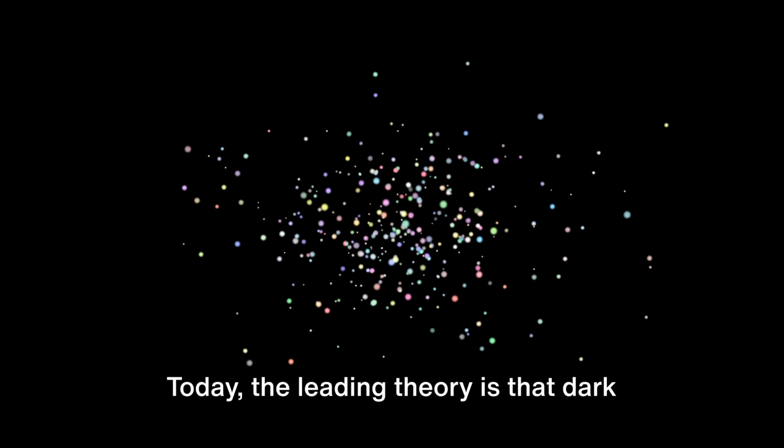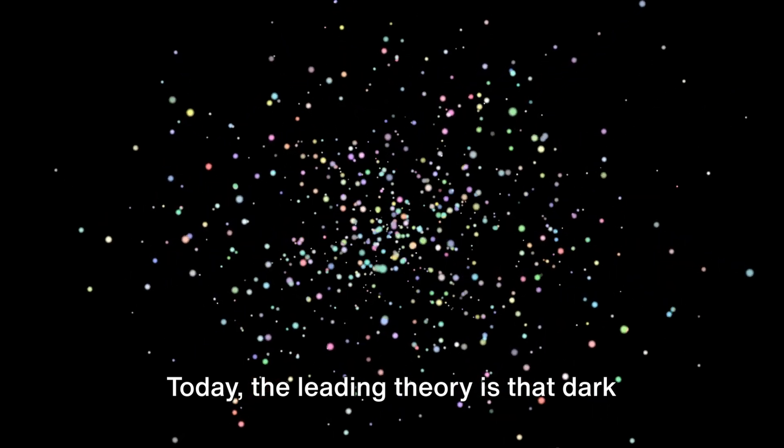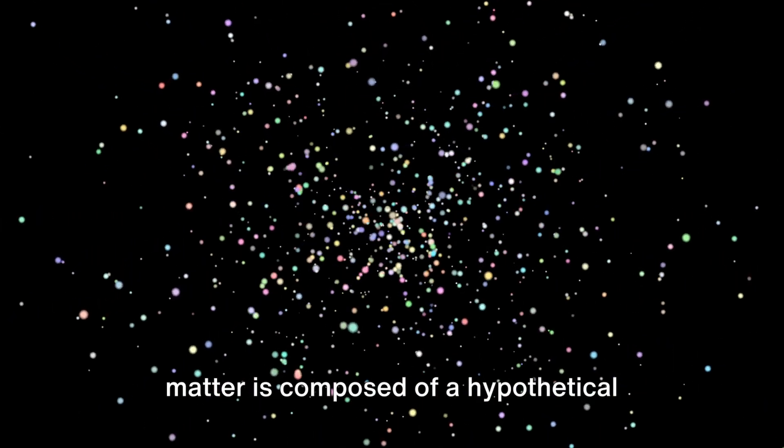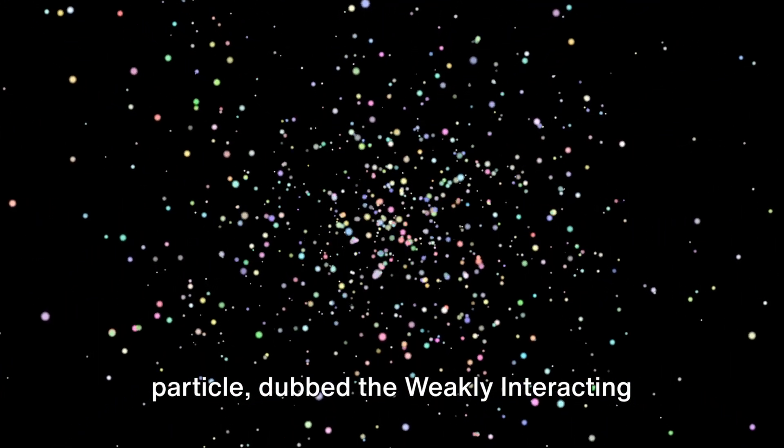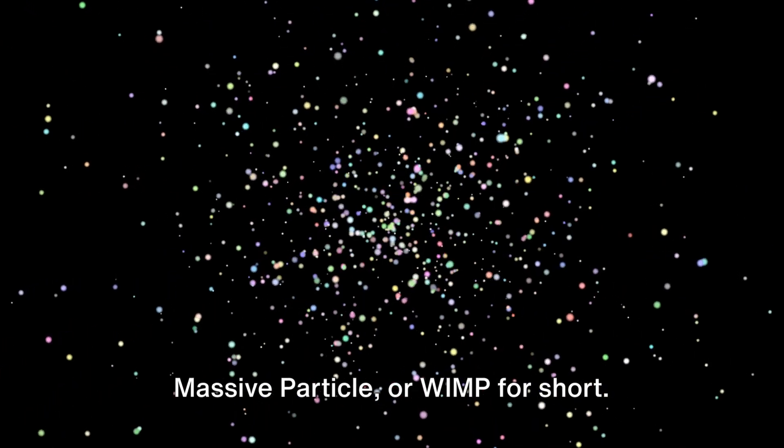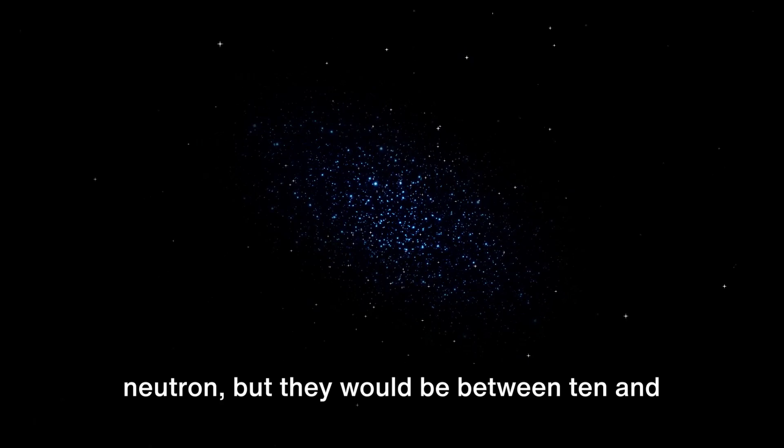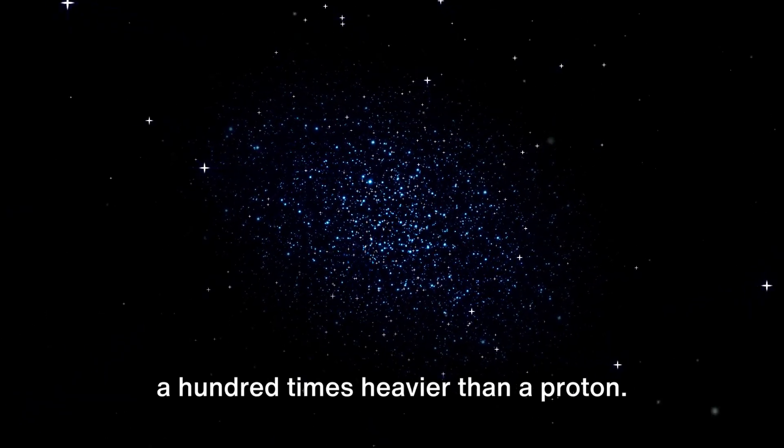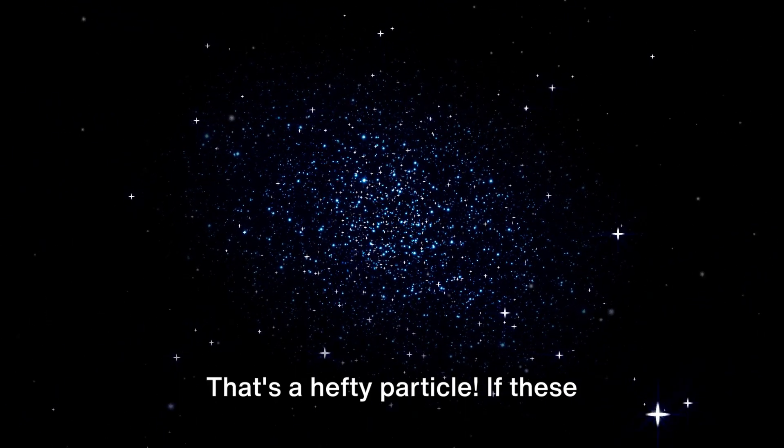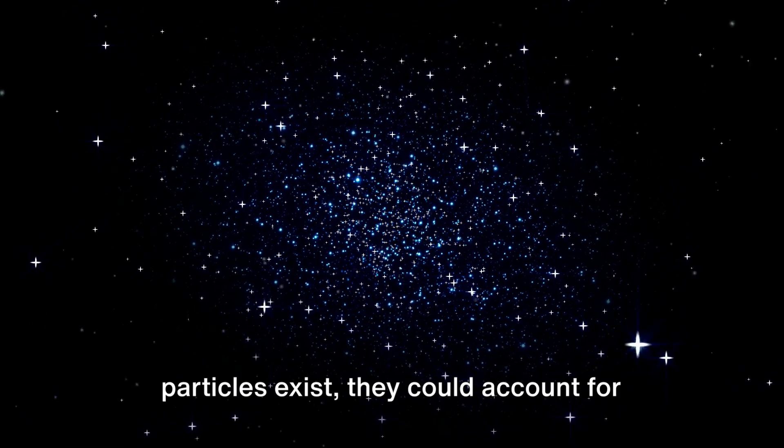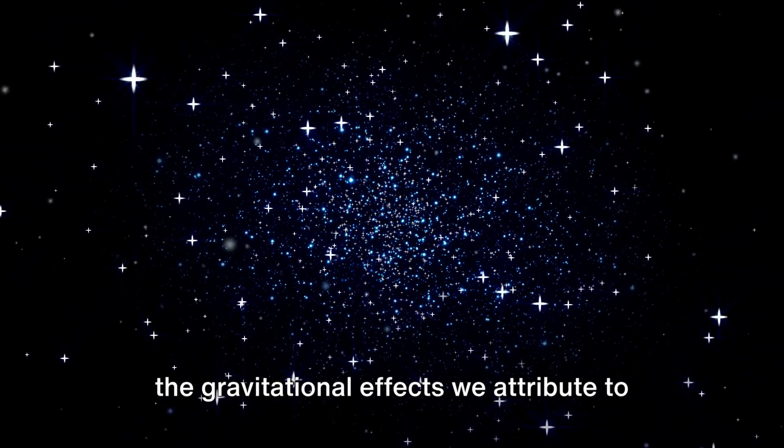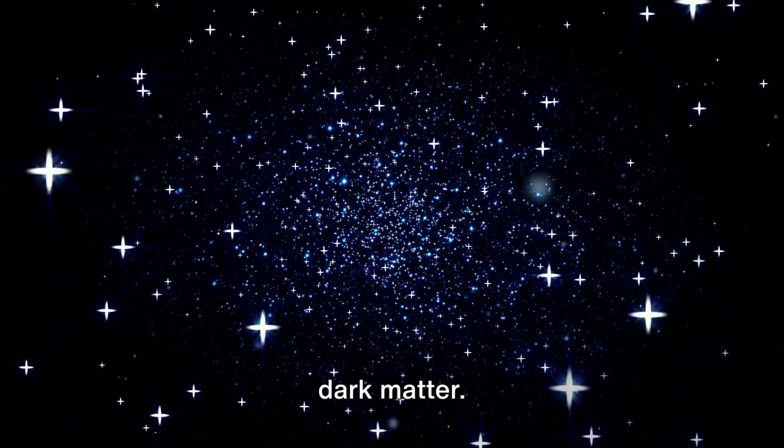This led to a shift in thinking. Today, the leading theory is that dark matter is composed of a hypothetical particle, dubbed the weakly interacting massive particle, or WIMP for short. These WIMPs would behave something like a neutron, but they would be between 10 and 100 times heavier than a proton. That's a hefty particle. If these particles exist, they could account for the gravitational effects we attribute to dark matter.